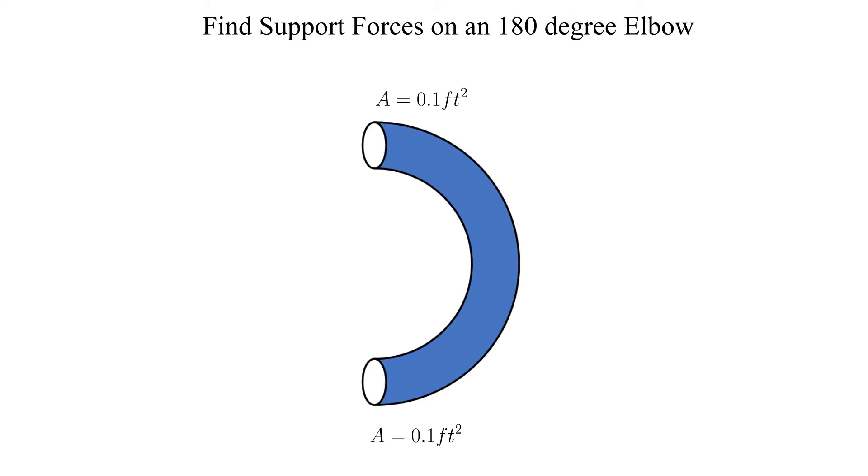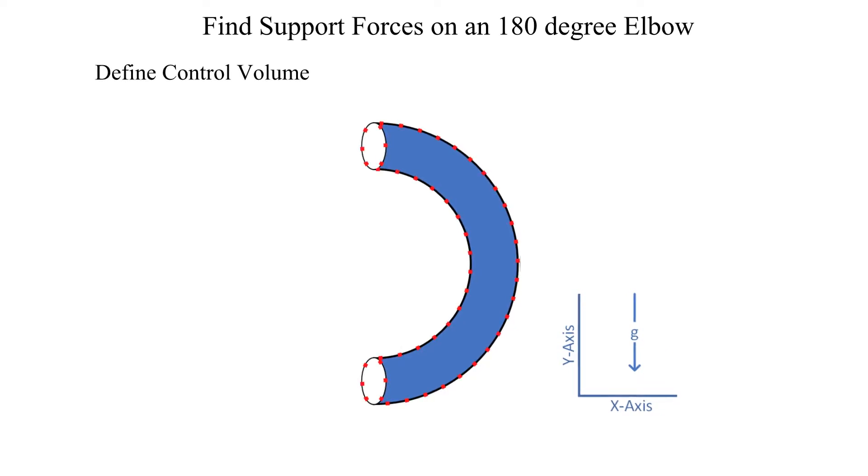Pictured is our 180 degree elbow. The inlet and outlet area are both 0.1 feet squared. A good first step is to define a coordinate system and identify the direction of gravity. Now let's define our control volume. In this example we choose the actual elbow to be the control volume.